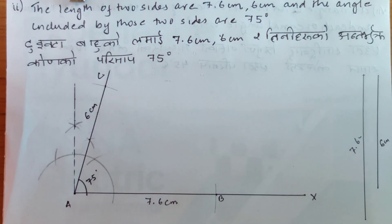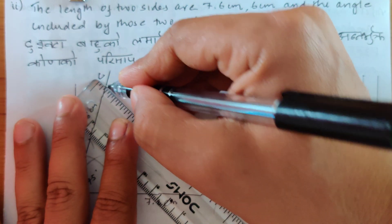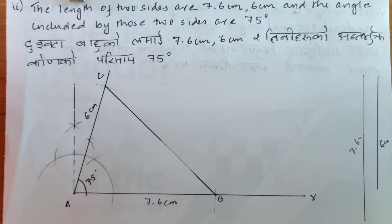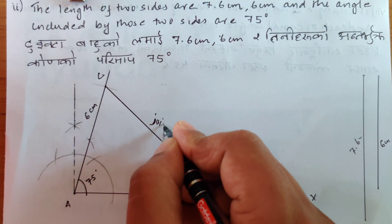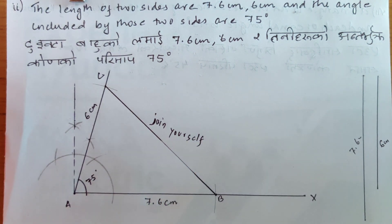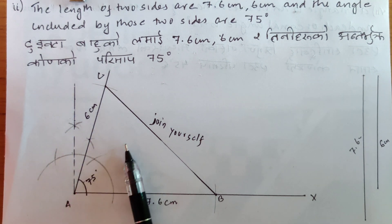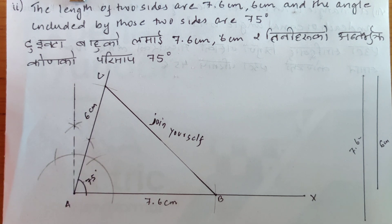Always measure with a protractor to check whether you've got 75 degrees or not — it should be roughly between 70 and 80. The angle included by the two sides is 75 degrees: this side is 7.6 cm, another side is 6 cm. From A we made an angle of 75 degrees and cut off 6 cm. Triangle is now ready. Now we need to draw an incircle — we know the steps.